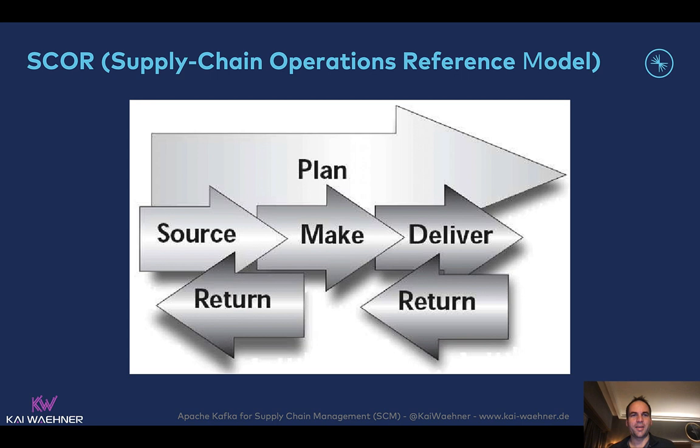A key measurement framework is the SCOR model — Supply Chain Operations Reference. This is really about the whole end-to-end process of planning, sourcing, making, delivering, and returning. Supply chains contain a lot of things, and this is not just for tangible goods but really for everything you produce that adds value and you want to sell. We will refer to this SCOR model during this talk because we want to leverage event streaming to improve several processes using it.